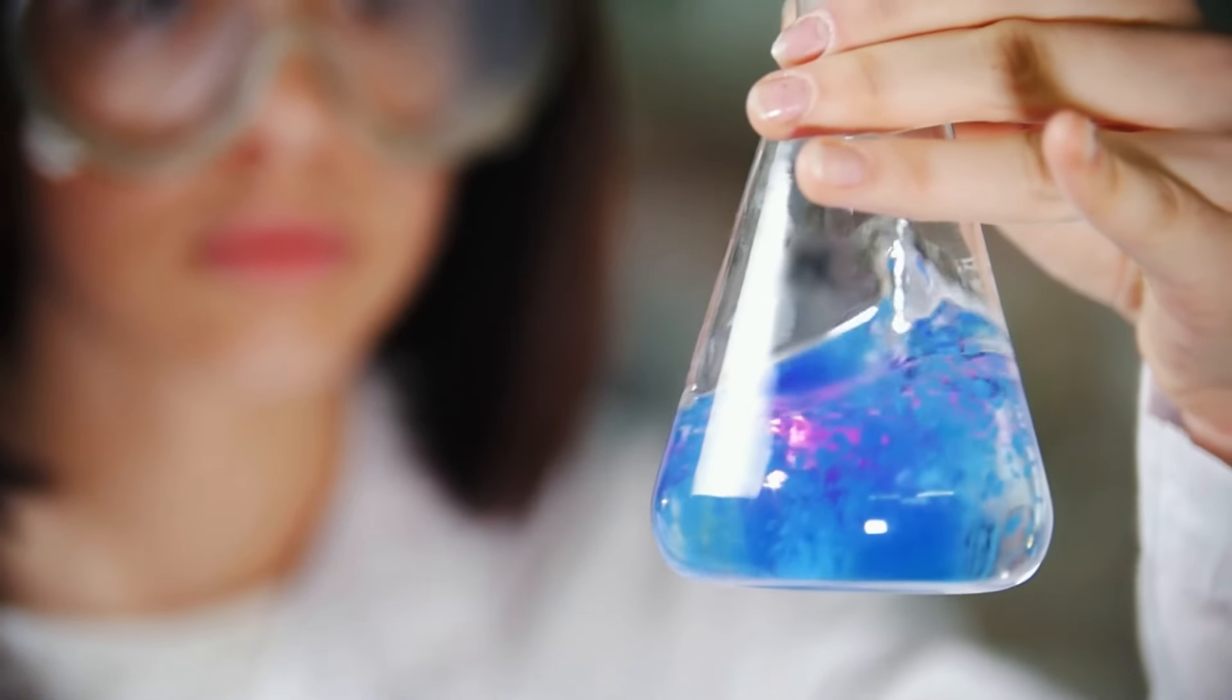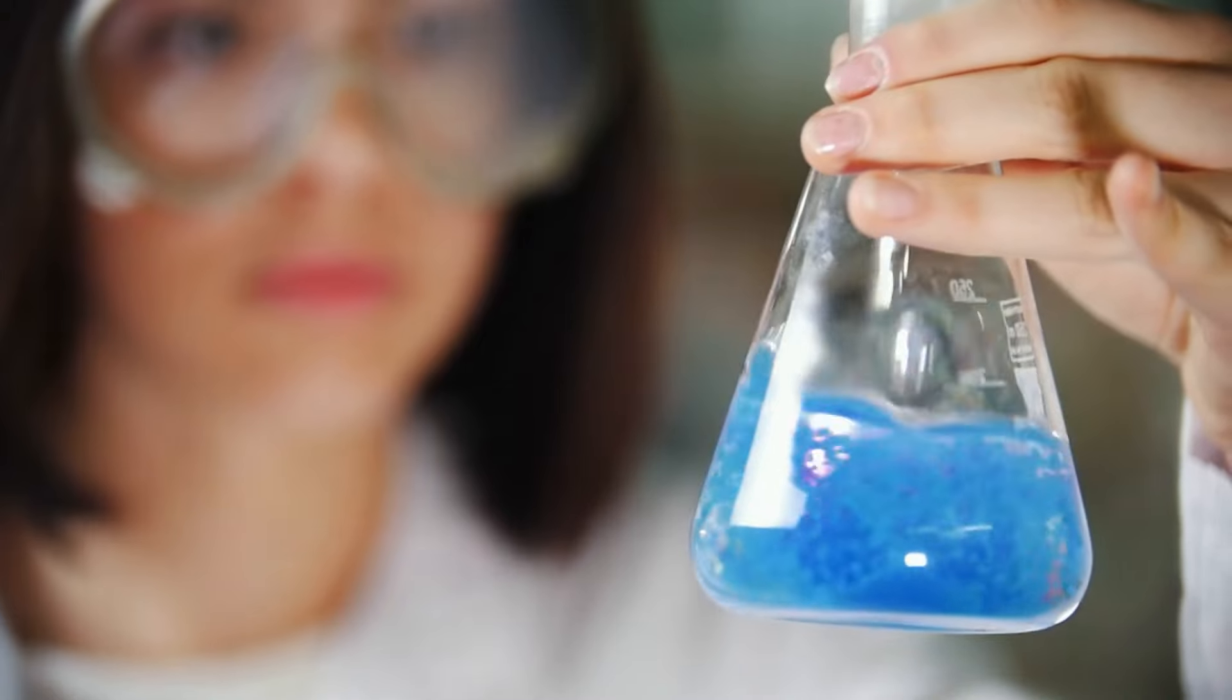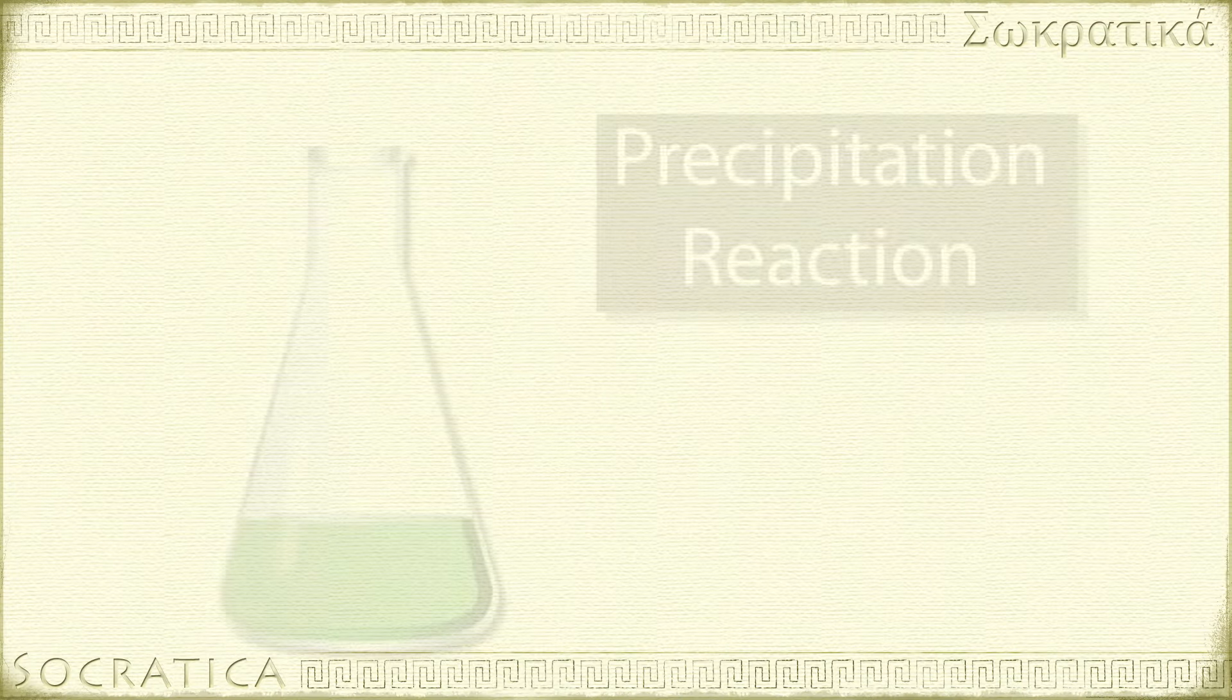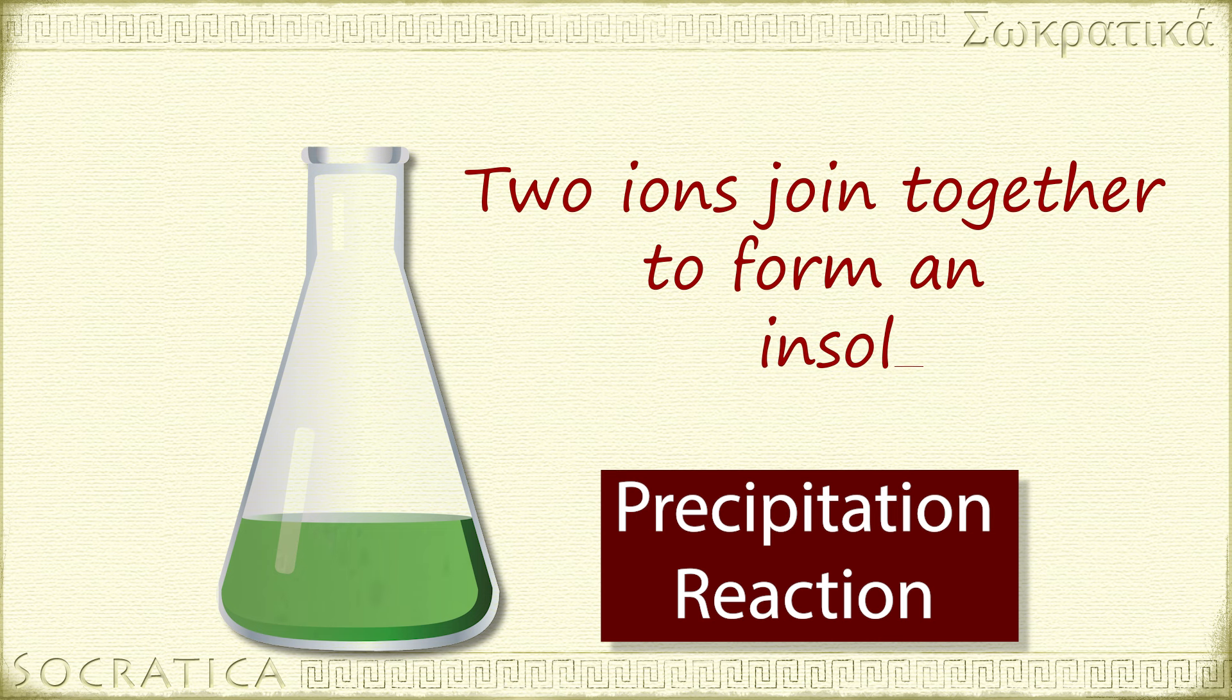We commonly see this kind of reaction when you have two ionic compounds in an aqueous solution. Very often, this results in the formation of a precipitate. So, let's look at precipitation reactions as a specific kind of double displacement reaction. Precipitation is what happens when two ions join together to form a compound that is insoluble in water. This new compound precipitates out of solution.